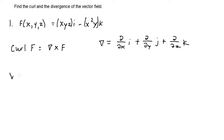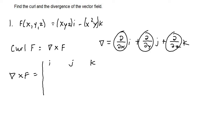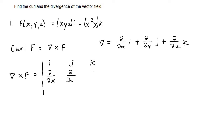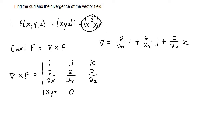To take the cross product of del and F, we need to set up a matrix. We put i, j, and k on the top row. Since del is being multiplied first, we put its components: partial derivative with respect to x, partial with respect to y, and partial with respect to z. Then we put the vector field components. xyz goes with i, so that's the x component. There is no j unit vector, so the y component is zero. For the k unit vector, we have negative x²y.